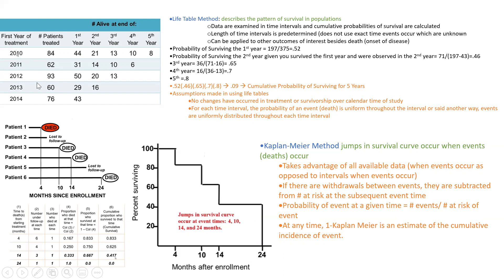One of my favorite methods is the Kaplan-Meier method, which I use in my research for infection models. You get this curve where every time there's a death, the curve takes a little stair step. You can calculate the probability of an event at any given time, and estimate the cumulative incidence of the event using one minus the Kaplan-Meier.